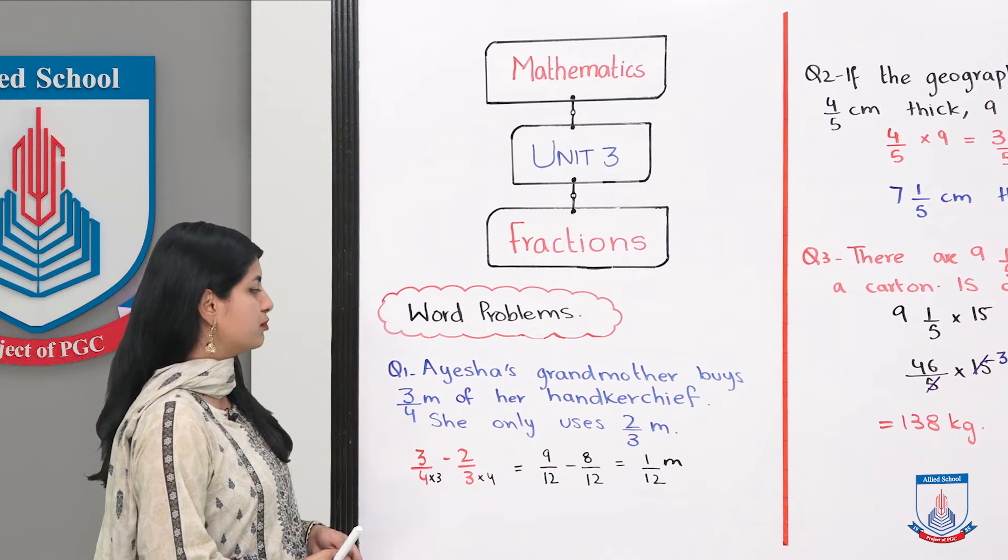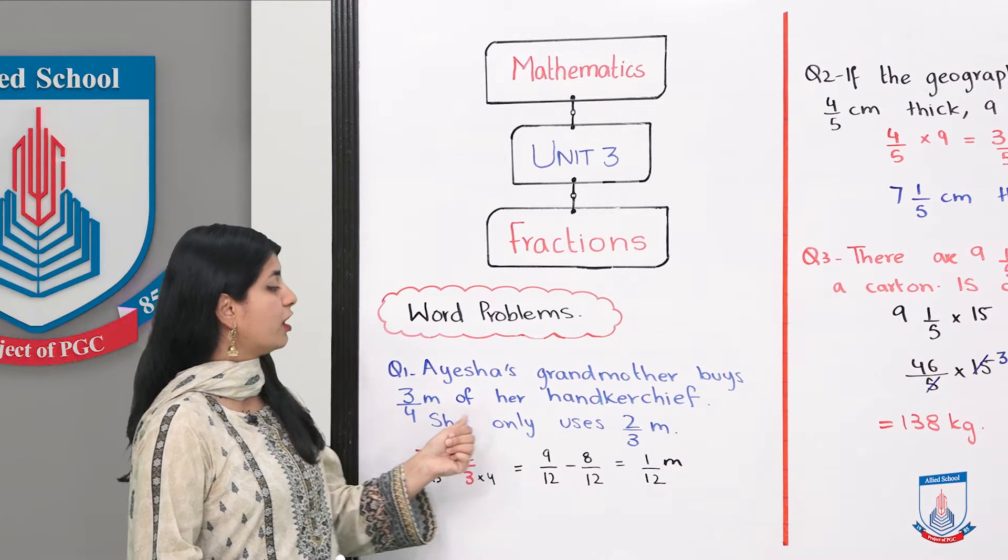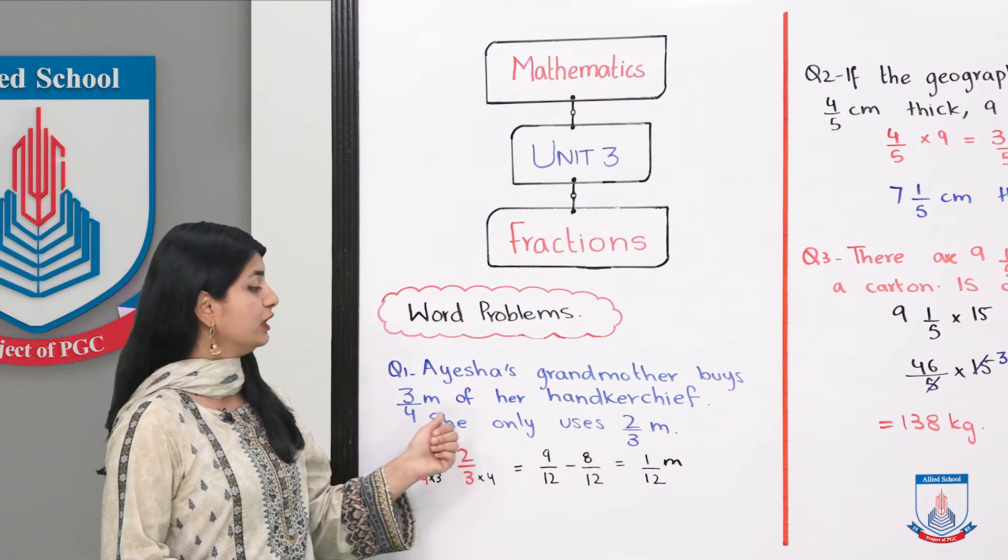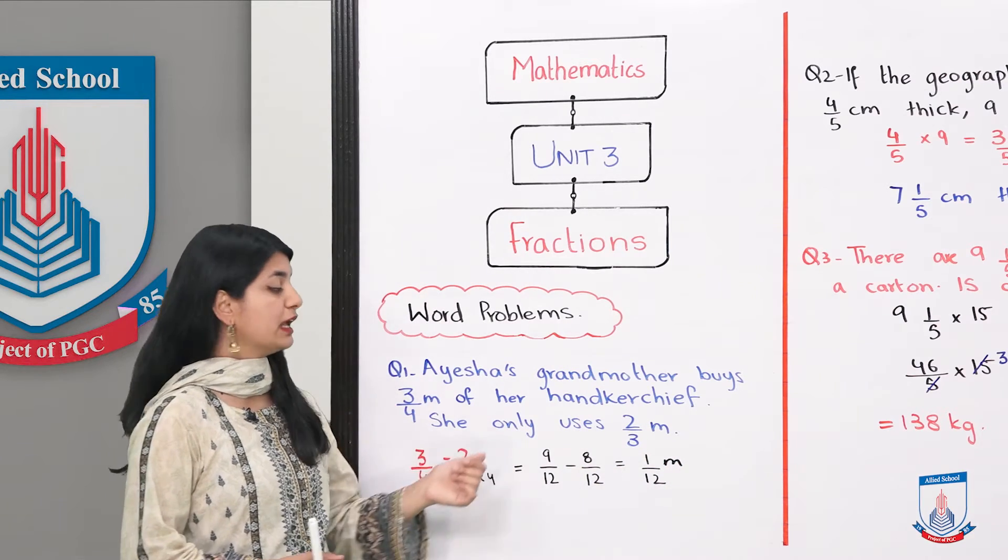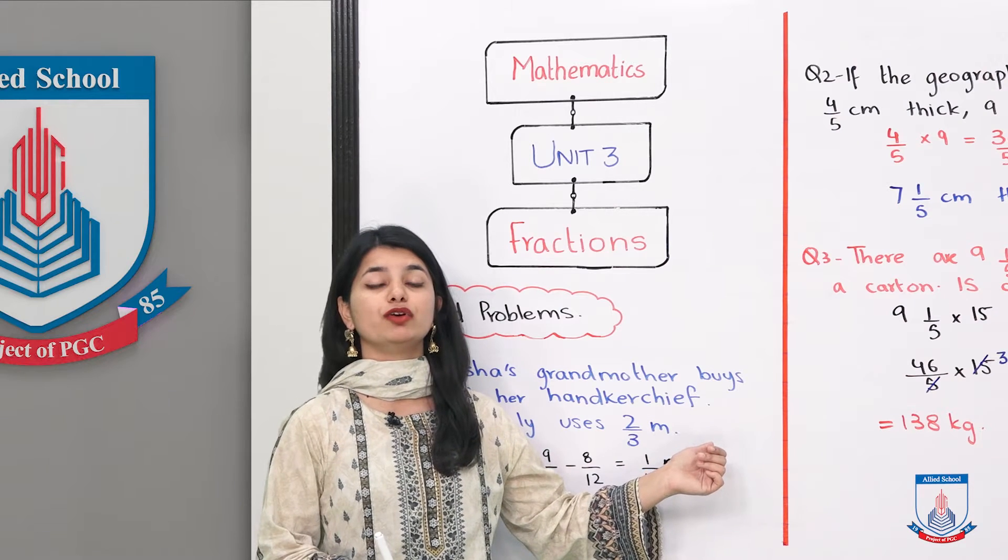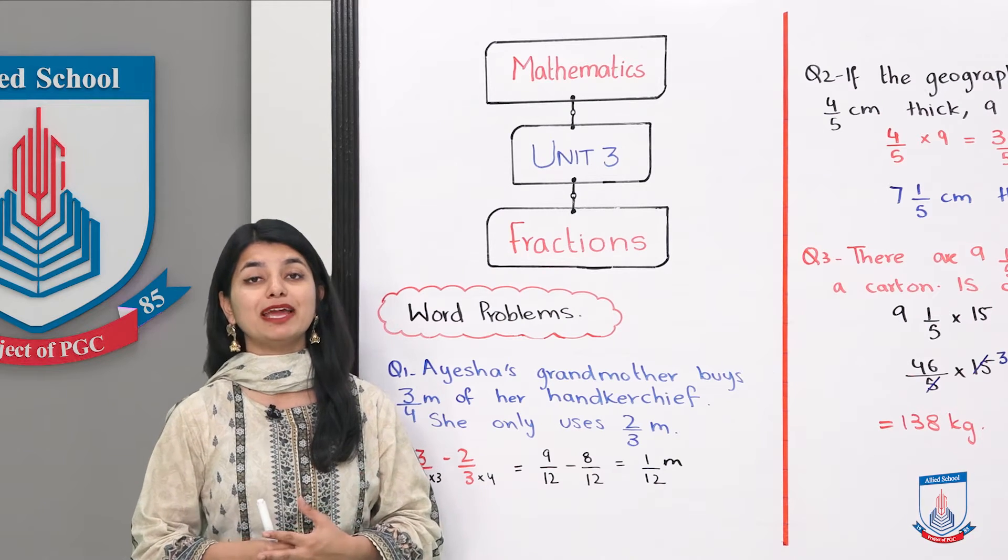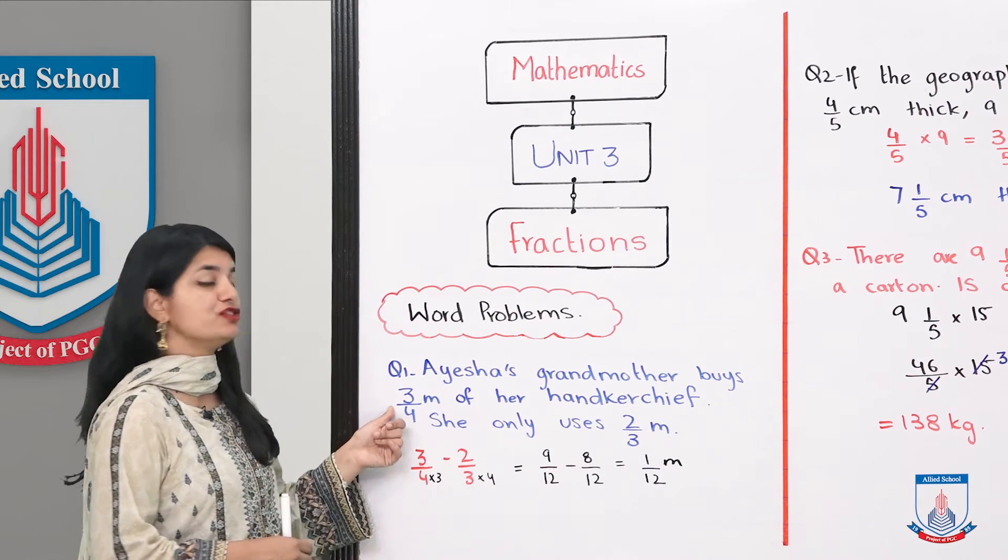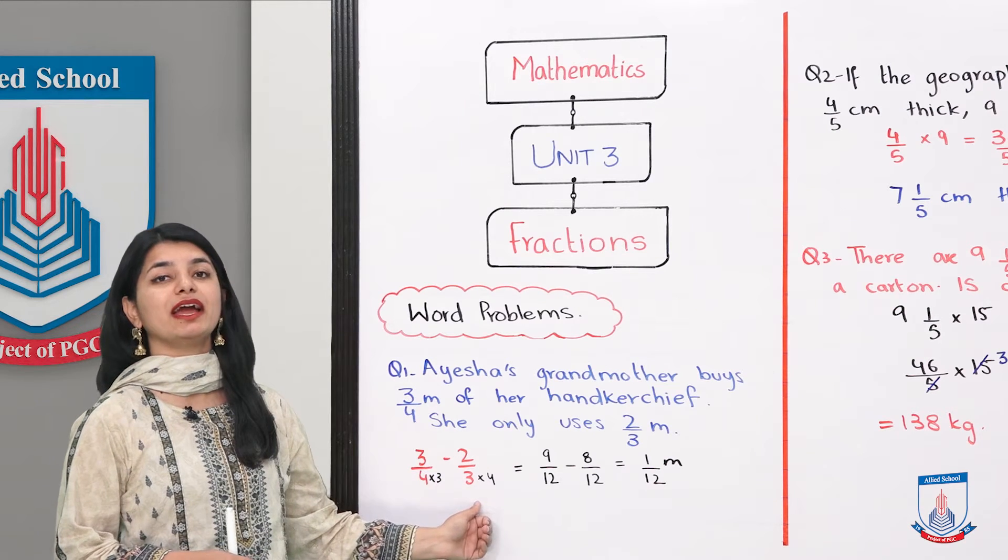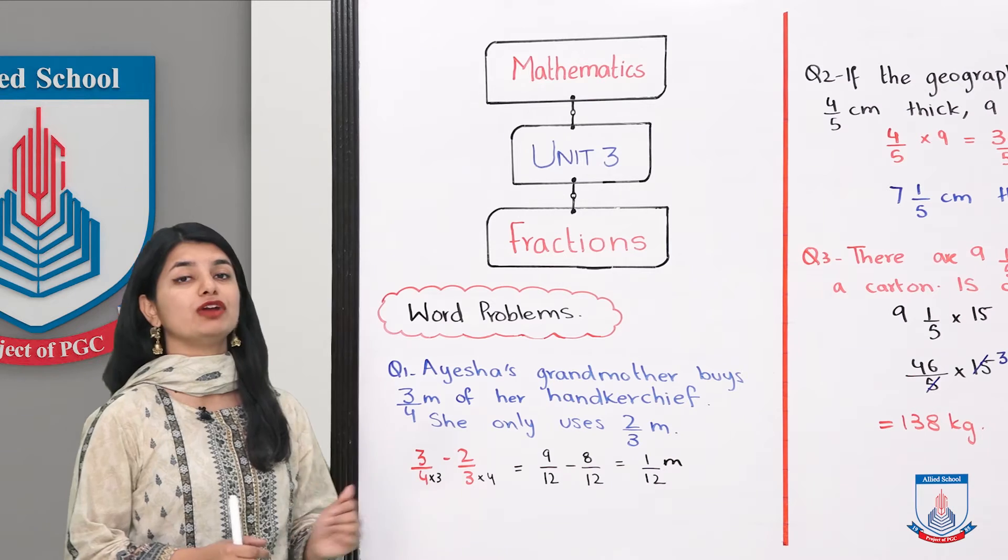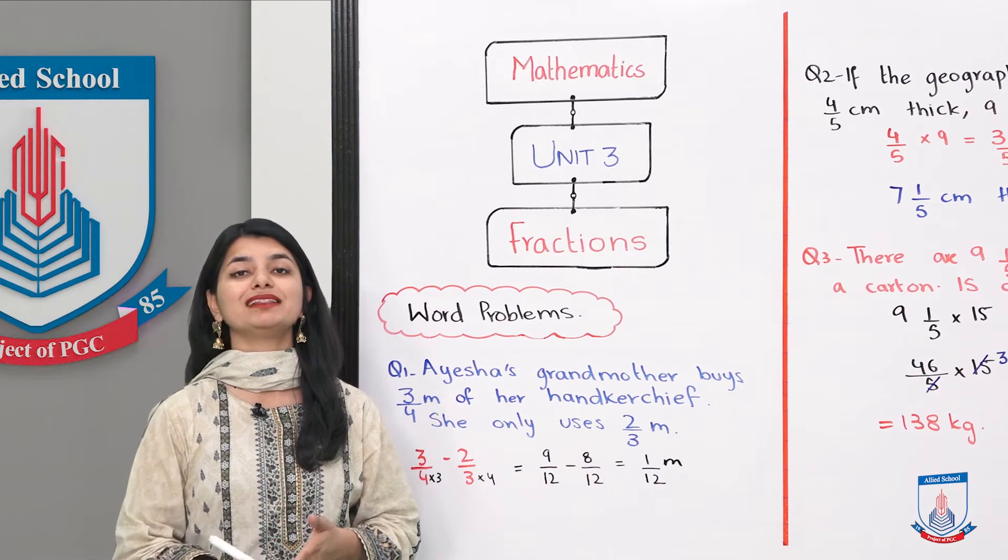So if we look at our first word problem, Aisha's grandmother buys 3 over 4 meters of her handkerchief. She only uses 2 over 3 meters. Now she has taken material, 3 by 4 meters, but only 2 by 3 meters she has used. When she has some left, you don't multiply, you subtract. What was the total, 3 by 4 meters, you have to minus 2 by 3 meters. You can't subtract because the denominator is not the same. Let's find the LCM.